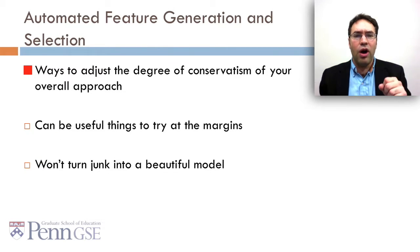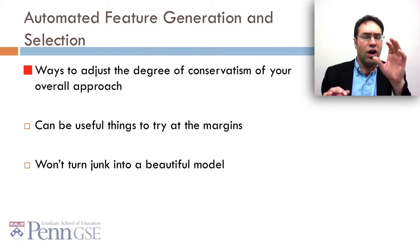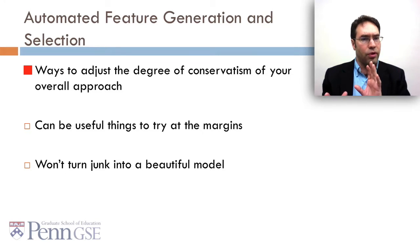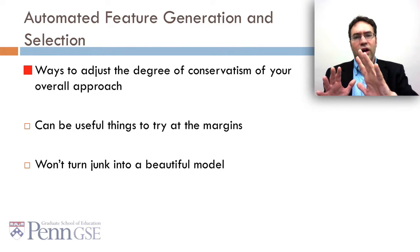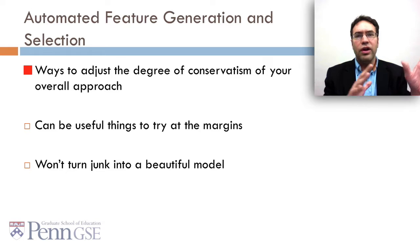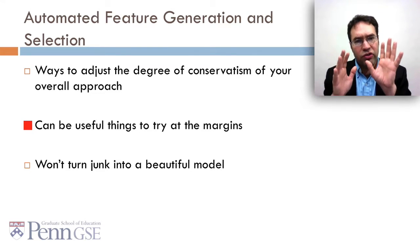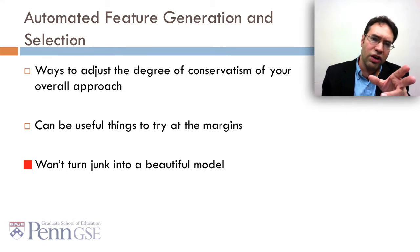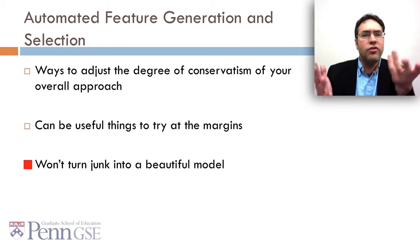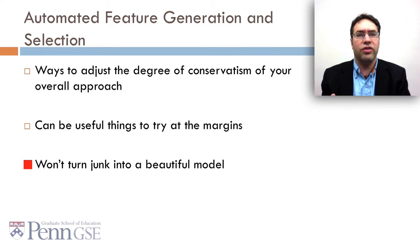So to sum up, automated feature generation and selection are ways to adjust the degree of conservatism of your overall approach. Automated feature generation can make a conservative approach a little more liberal. Automated feature selection can make a liberal approach a little more conservative. Use them together and you can play with the space a little bit. These can be useful things to try at the margins. It's not going to turn junk into a beautiful model. If you have junk, none of this stuff is going to really fix it. What you really want to do is do feature engineering. But if you've got a basically decent model, maybe this can make it a little bit better.